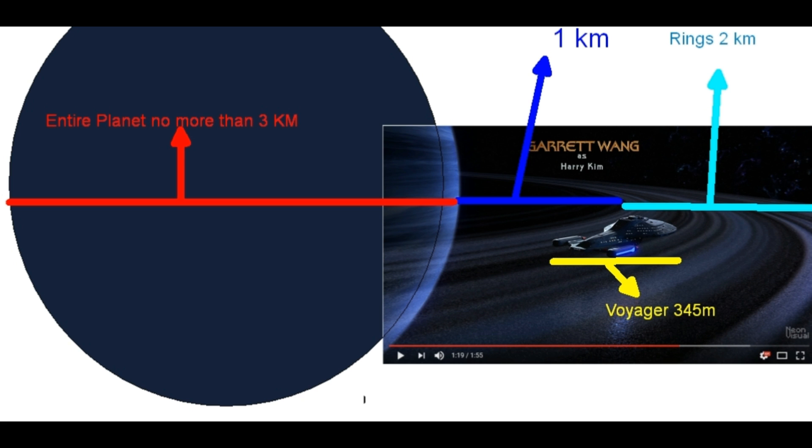Now we also know that Voyager is only 345 meters in length. So, based on this fact, I calculated that the rings in this situation are only 2 kilometers in size.